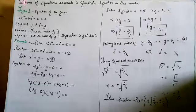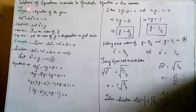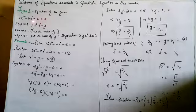Bismillahirrahmanirrahim. Dear students, today we have a topic: solutions of equations reducible to quadratic equations in one variable. Type number one: equation of the form a·x^(2n) + b·x^n + c = 0. How will we solve this equation — that is, how will we make it a quadratic equation?